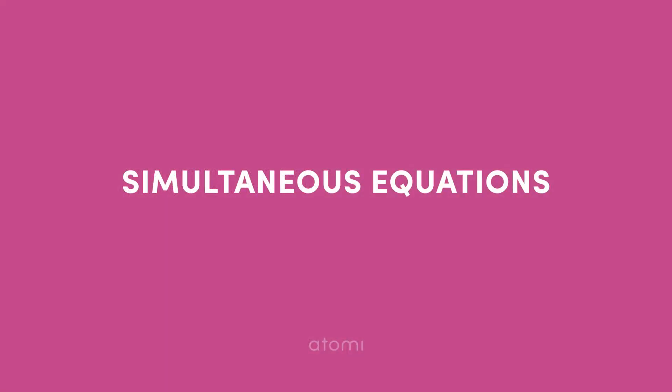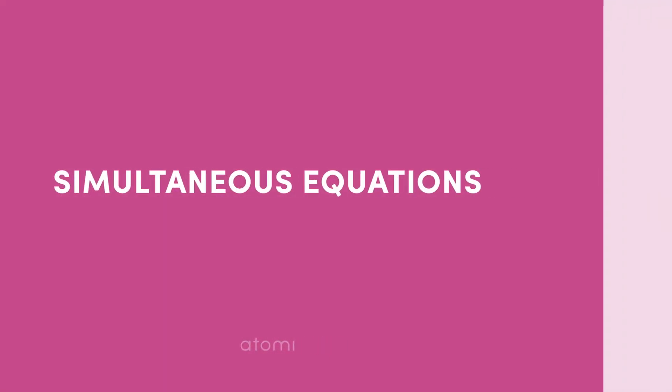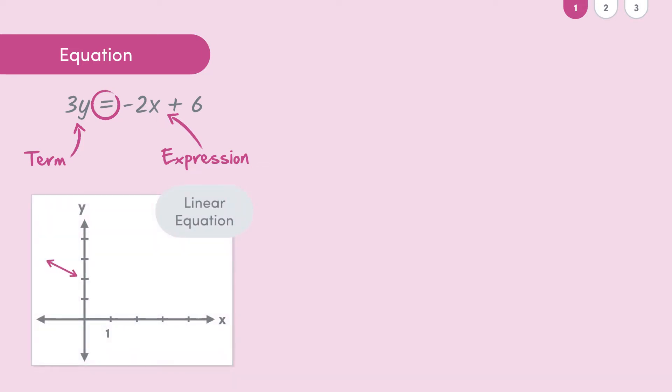All right, now I know you're dying for me to explain what a simultaneous linear equation actually is. So here goes: as you should remember from our year 11 algebra course, an equation is where we have two expressions or terms which equal one another. We also found out that a linear equation simply means an equation that when represented graphically is a straight line.